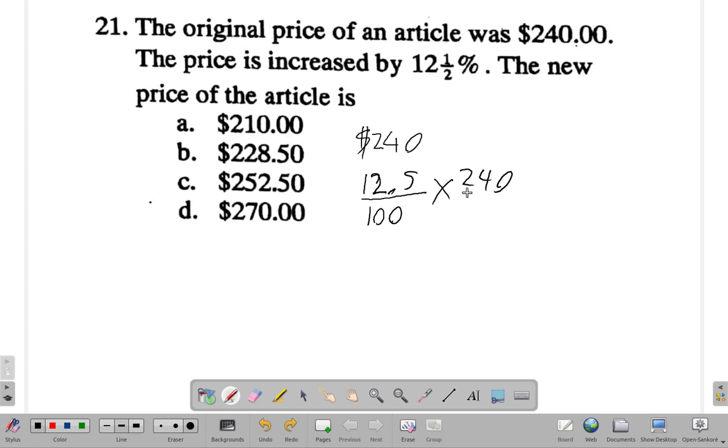12.5% of means multiply $240.00. This is the amount that was put on the money. So, let's cancel down. 10 into 100 is 10. 10 into 240 is 24.00.